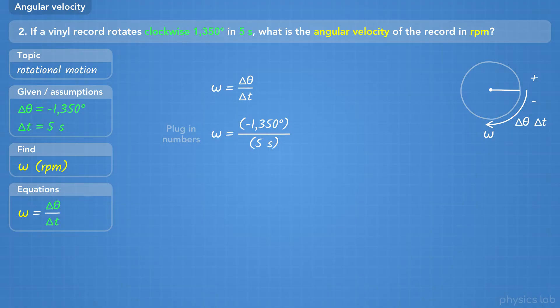We plug in negative 1350 degrees divided by 5 seconds. When we do the math, we find the angular velocity is negative 270 degrees per second. However, we're not done yet, since the problem asked us to find the angular velocity in revolutions per minute.